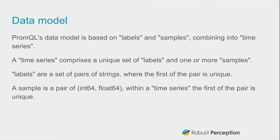The data model is based on this idea of labels and samples, combining them into time series. A time series is a unique set of labels and one or more samples. Labels are a set of pairs of strings, and the first of each pair has to be unique within a label within a time series. A sample is a pair of an int64 and a float64, and within a time series the first of the pair is again unique.